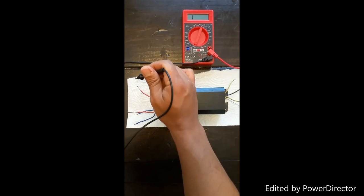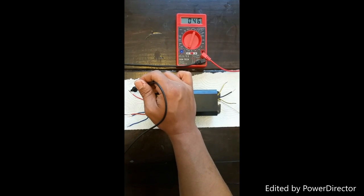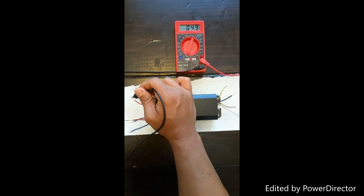Now the red one has a problem. You can see the multimeter showing the resistance, it's bouncing all over the place.